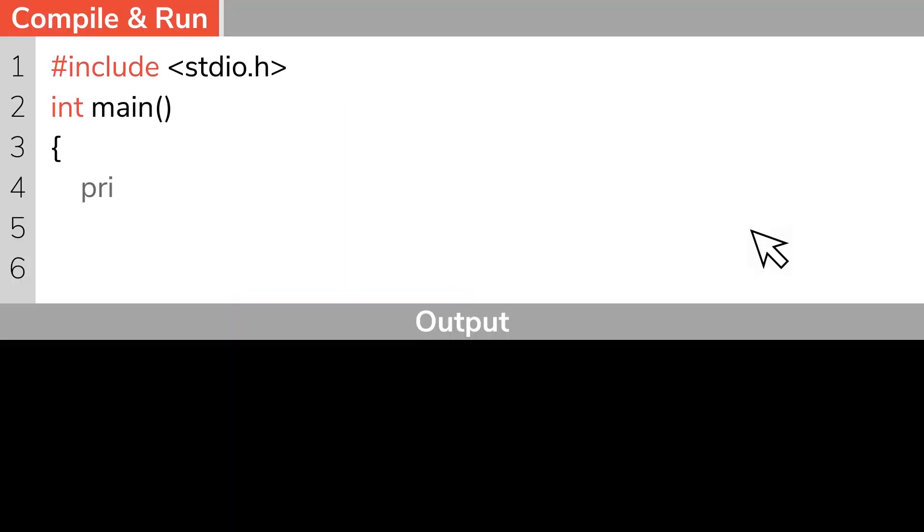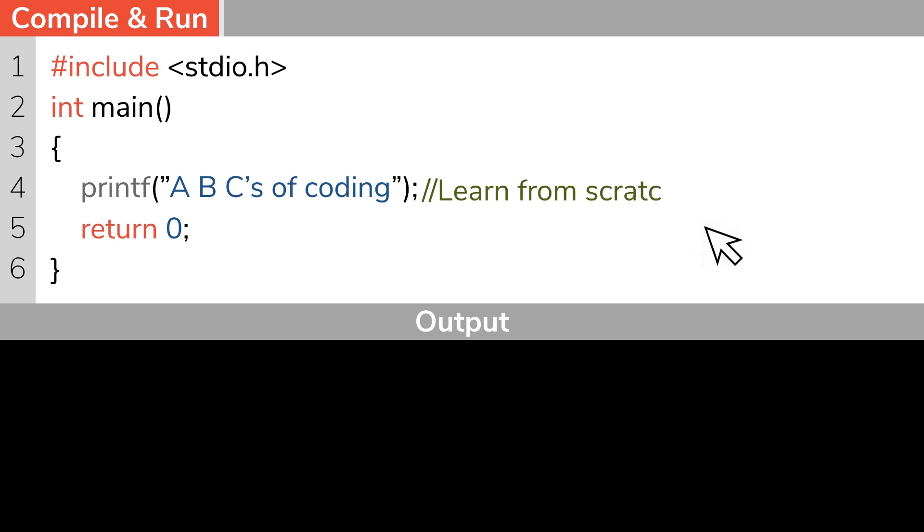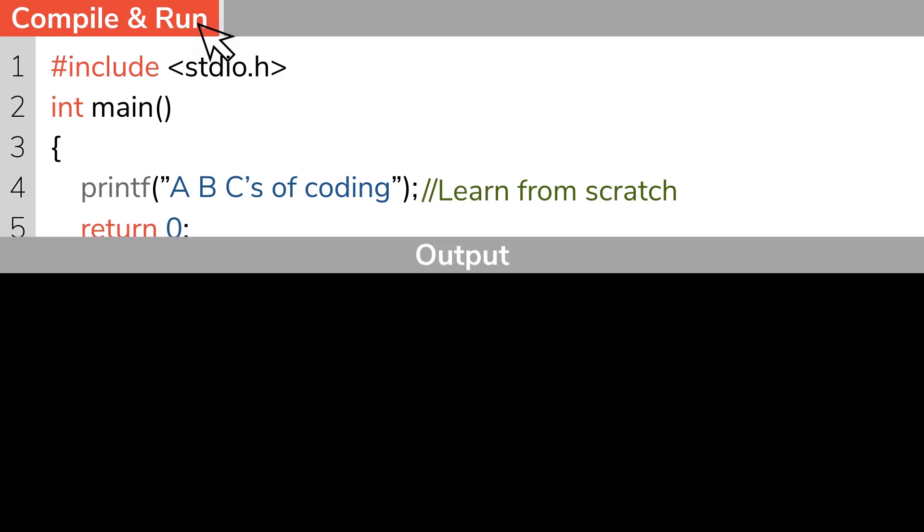Hey guys, I'm Alphonse. Welcome to the 14th episode of Anybody Can Code C Programming Series. If you'd like to take a look at the previous episodes, please use the link in the description. In today's episode, we'll be taking a look at call by value method and call by reference method in C programming.